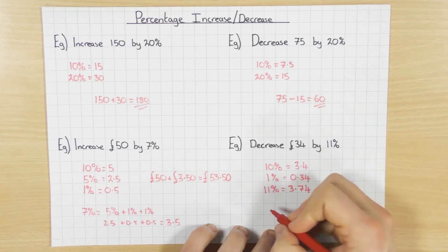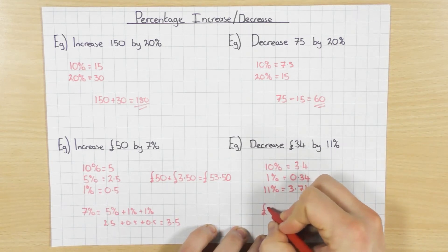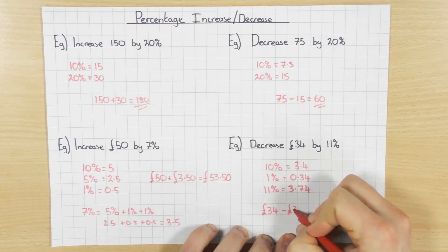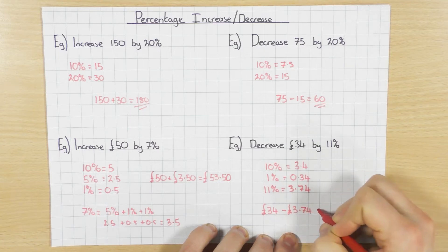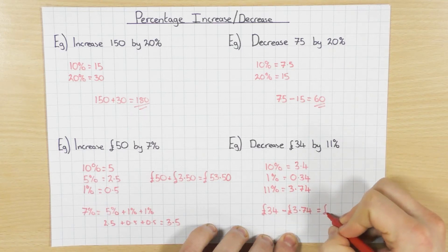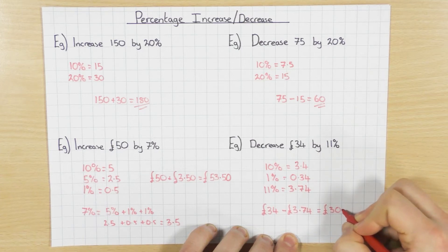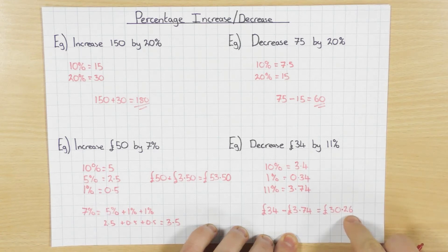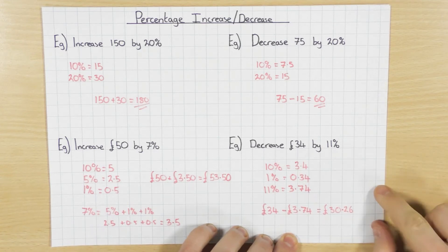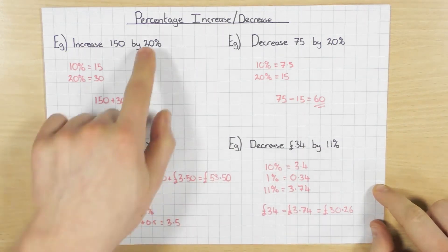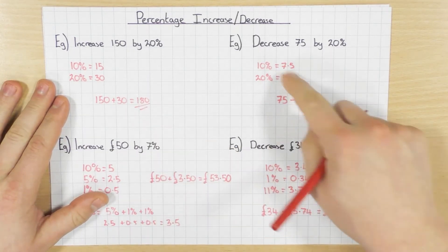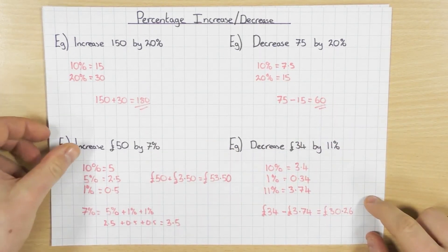Because I'm decreasing, I need to do £34 take away 11%, which we worked out to be 3.74, and that leaves you with £30.26. Again, two decimal places there as well. Okay, so that's the non-calculator method: find out the percentage, and then if it's an increase, add it on; if it's a decrease, take it away.